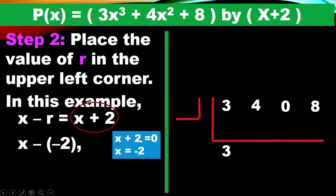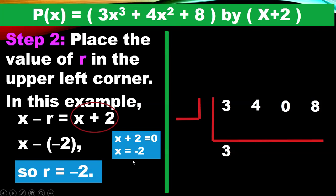For the divisor x + 2, we equate to 0: x + 2 = 0. Transposing 2 to the other side gives x = −2. So r is equal to −2. We write −2 on the upper left corner of our synthetic division setup.